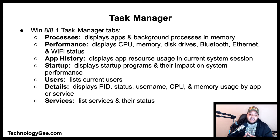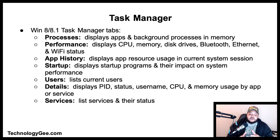The Windows 8 and 8.1 Task Manager tabs are: Processes — displays apps, background processes, and memory; Performance — displays CPU, memory, disk, Bluetooth, Ethernet, and Wi-Fi status; App History — displays app resource usage in the current system session; Startup — displays startup programs and their impact on system performance; Users — lists current user details including PID, status, username, CPU, and memory usage; Services — lists services and their status.